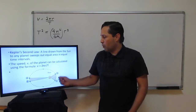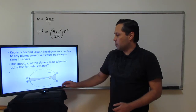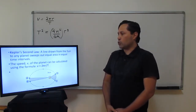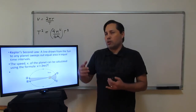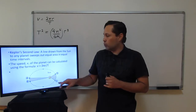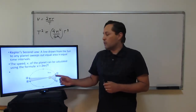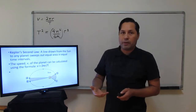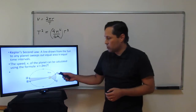The speed of a planet is calculated using the formula V equals 2πr over T. This is just the distance traveled — the circumference of the circle, 2πr — divided by the time to complete one revolution, the period T. That is the formula for the speed of a planet as it goes around the sun.